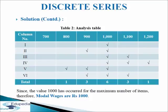From the analysis table, the total tick marks are: 700 — none; 800 — 1; 900 — 3; 1000 — 6; 1100 — 3; 1200 — 1. The value 1000 occurs the maximum number of times with 6 tick marks, therefore the modal wages are rupees 1000. This is how we make the grouping table and analysis table when calculating mode in discrete series.